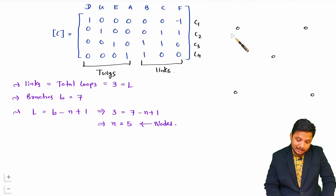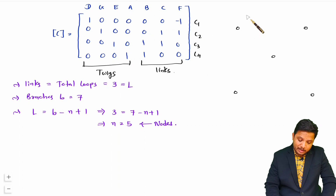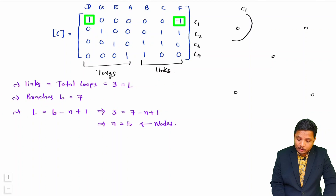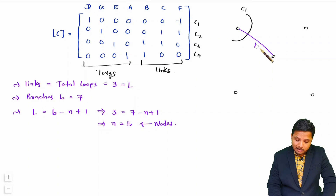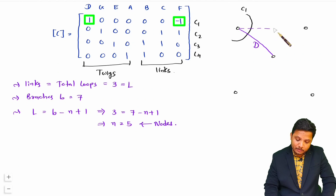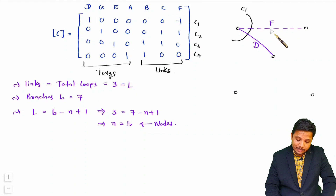Let us check with c1. I am providing c1 here, and with this c1 we are having one twig that is d. So I will provide the connection of d at the center. There is one link which is f, so f I am connecting over here. I'm not showing direction right now — I am just connecting it.